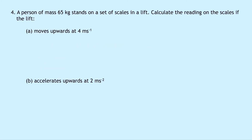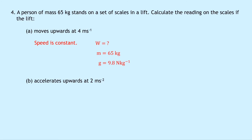Question four: a person of mass 65kg stands on scales in a lift. Part A asks for the reading if the lift moves upwards at 4 m/s. Although not explicitly stated, this must be constant speed, so forces are balanced. We find weight: W equals mg equals 65 times 9.8, which equals 637 newtons. Since R equals W, the reading is 637 newtons.